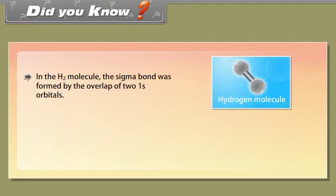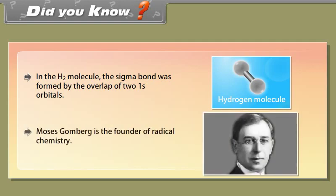Did you know? In the hydrogen molecule, the sigma bond was formed by the overlap of two 1s orbitals. Moses Gomberg is the founder of radical chemistry.